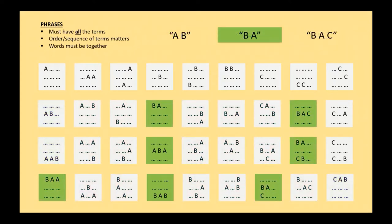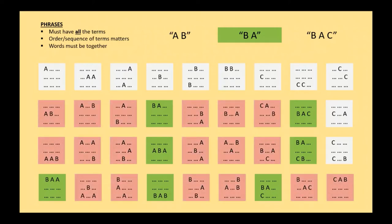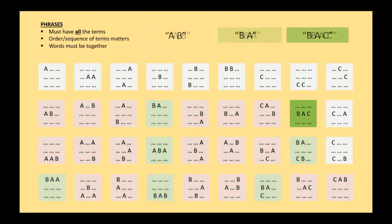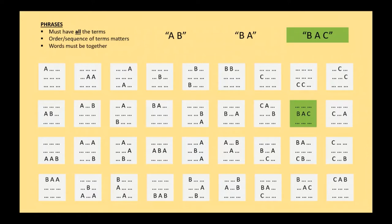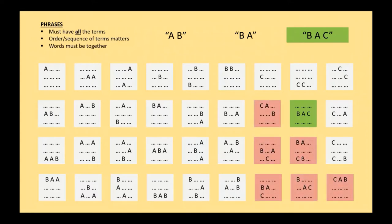Similarly, if we have BA, then these are the only items that actually match BA because they have BA right next to each other in that order. These are the ones that would have matched if we said B and A, but they don't match the phrase BA right next to each other. And then this is the only one that matched BAC because it's the only document that actually has BAC right next to each other in that order. These other items would have matched if we said B and A and C because they contain all of those search terms, but they don't match because they aren't in that order right next to each other.